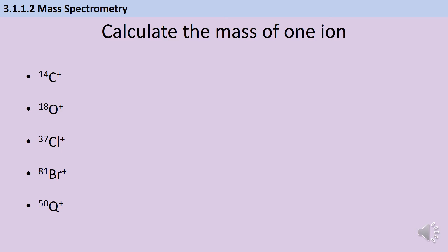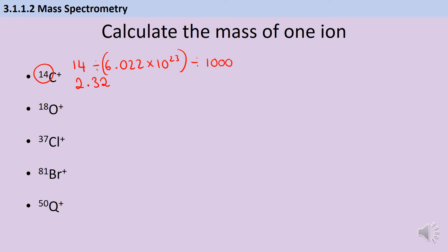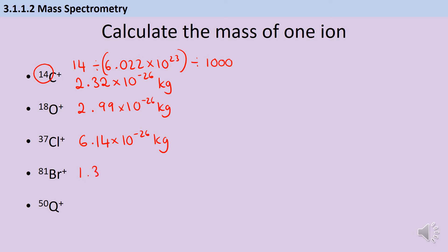In each instance, the actual identity of the ion is completely irrelevant — it doesn't matter if it's carbon or oxygen, or even if we've used Q for an element that hasn't been named. The only important thing is the mass number. So in each instance, we're going to do the mass number divided by Avogadro's constant, then divide by 1000 to turn it into kilograms. For carbon-14: 2.32 × 10⁻²⁶ kg. For oxygen-18: 2.99 × 10⁻²⁶ kg. For chlorine-37: 6.14 × 10⁻²⁶ kg. For bromine-81: 1.35 × 10⁻²⁵ kg. And for unknown element Q: 8.30 × 10⁻²⁶ kg.